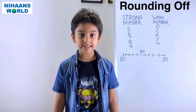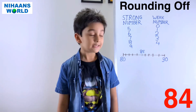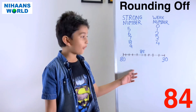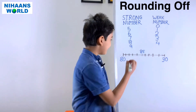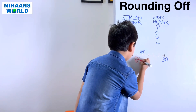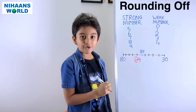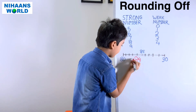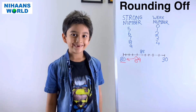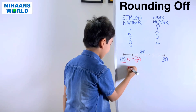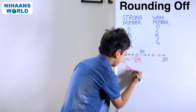Friends, let's estimate the number 84 using a number line. Where can we display 84? We know 84 is before 85. So, can you tell me which ten is nearest to 84? That's right — 80. So 84's nearest ten is 80.